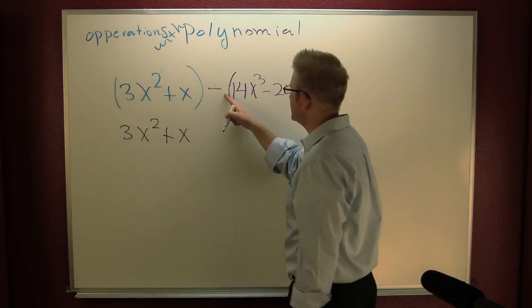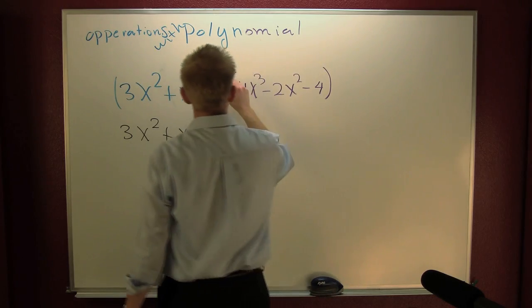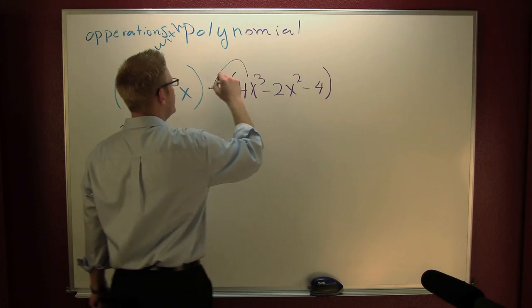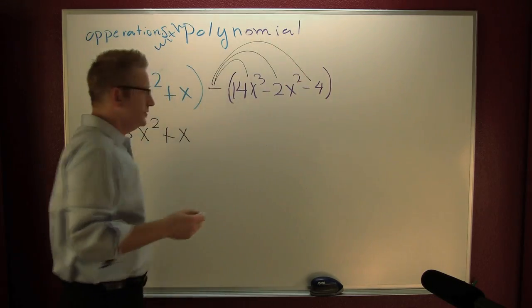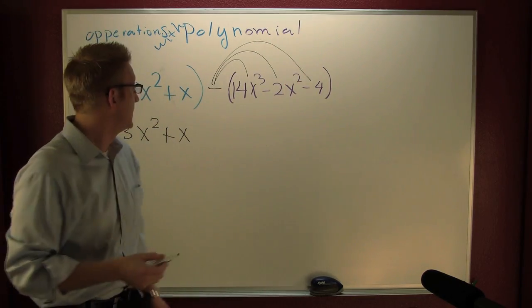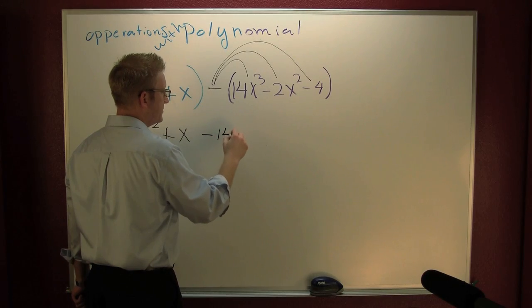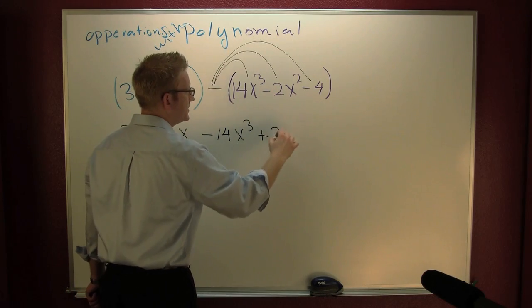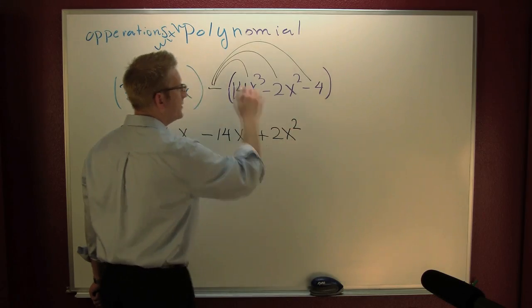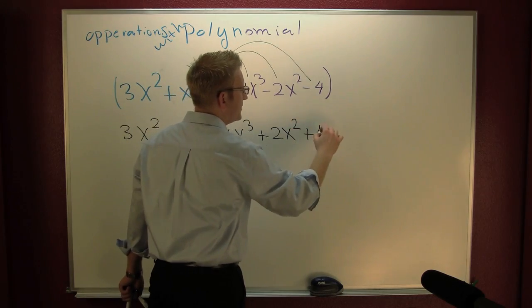Here we do see that we got a minus sign on the outside, and then this is a minus 14x to the third and a plus 2x squared and a plus 4.